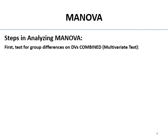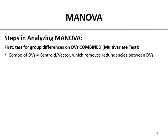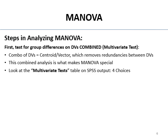First, you test for group differences on the combined DVs — that is a multivariate test. You ask: do these groups significantly differ when I combine the DVs into a single centroid? Your combination of DVs is called a centroid or a vector. What that does practically is it removes redundancies between the DVs — to the extent they overlap, you don't count that overlap twice. This combined analysis is what makes MANOVA special. It gives you a multivariate test — do these groups differ on the combined dependent variables?